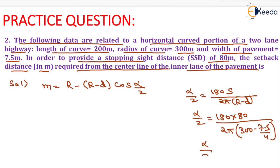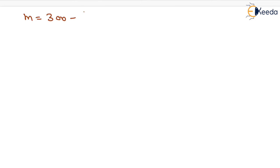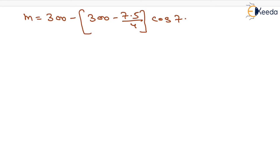On solving, the value of alpha/2 equals 7.687 degrees. Now we calculate the setback distance m, which equals 300 minus (300 minus 7.5/4) × cos(7.687°). On solving this, we get the setback distance m equals 4.55 meters.